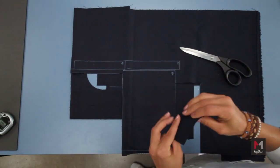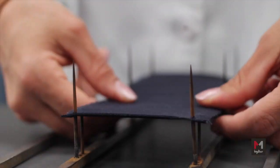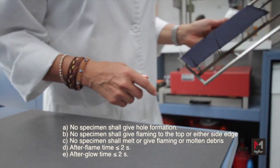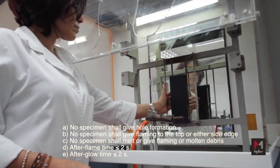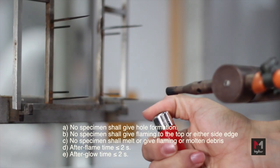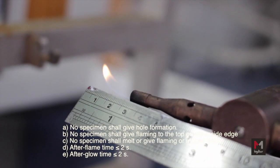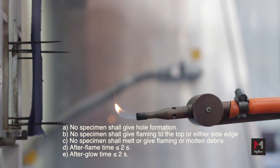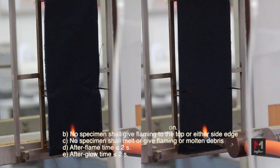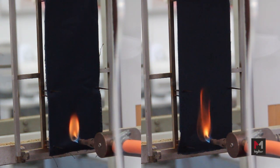When tested according to Procedure A, the flame is applied horizontally to the fabric. It shall meet the following requirements: No specimen shall have hole formations. No specimen shall flame at the top or on either side. No specimen shall melt or have flaming or molten debris. The mean value of after-flame time shall be less than or equal to 2 seconds. The mean value of afterglow time shall be less than or equal to 2 seconds. Seams shall continue to hold the panels of fabric together.